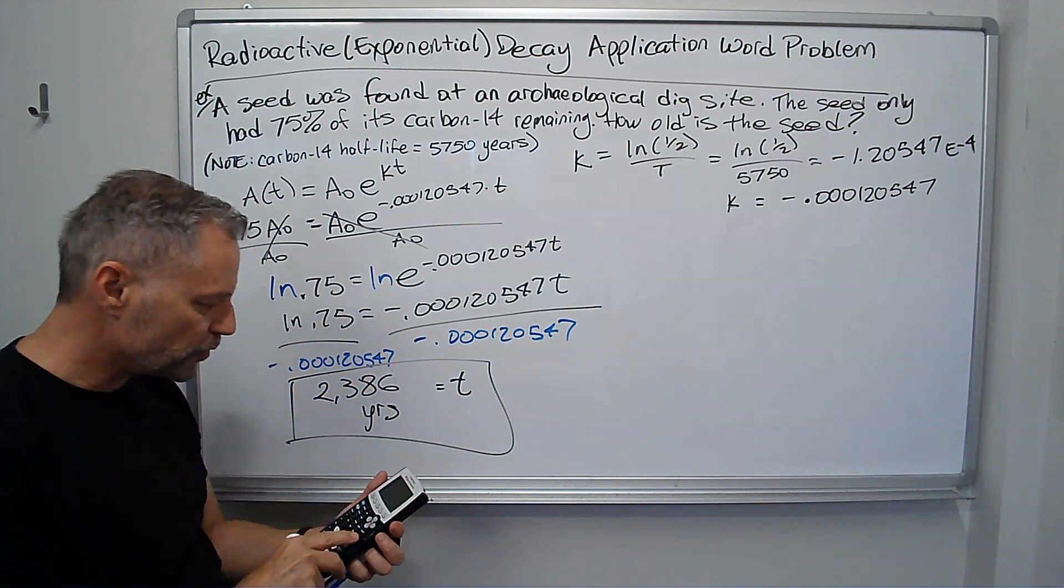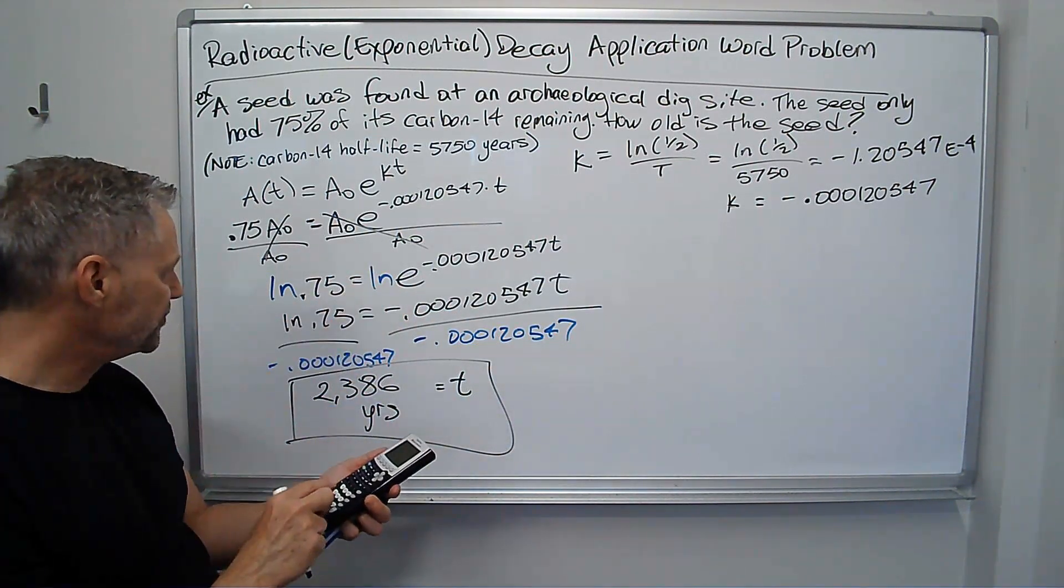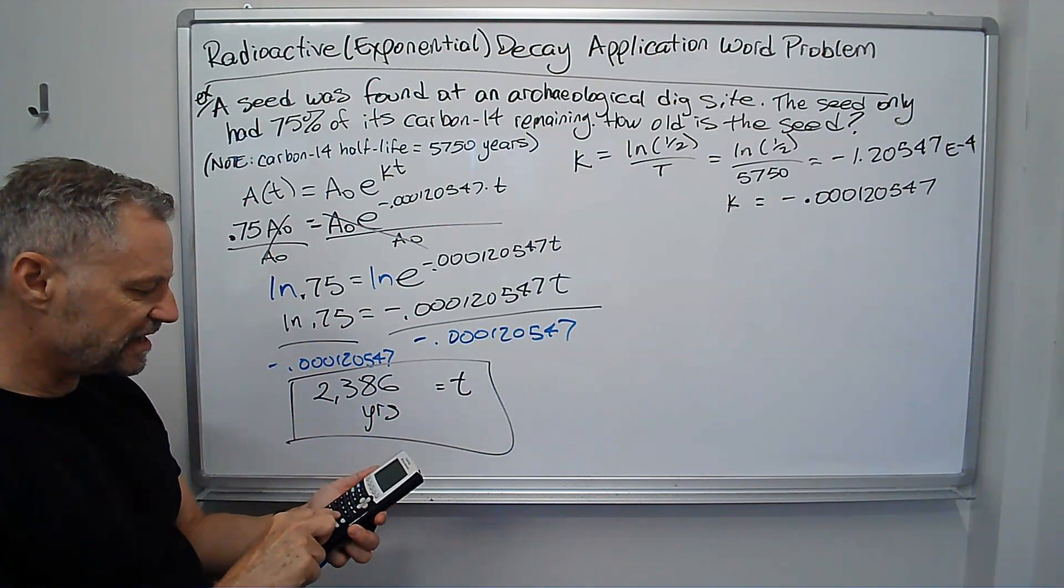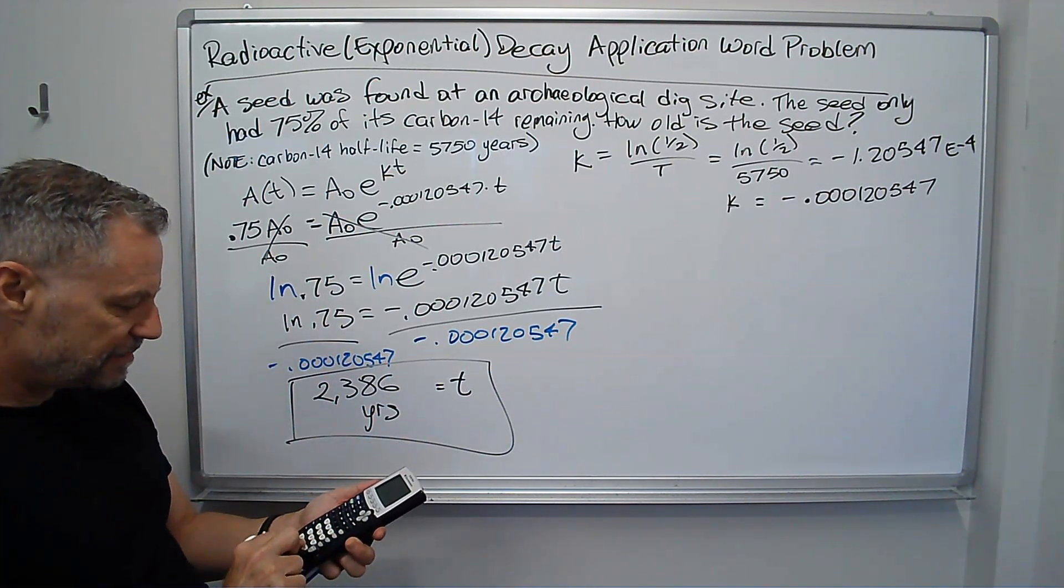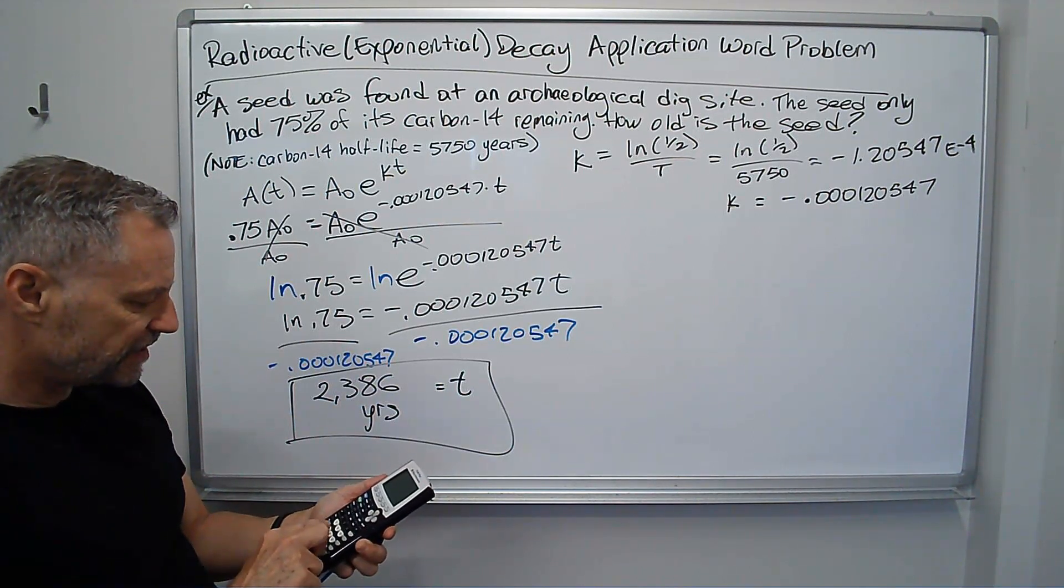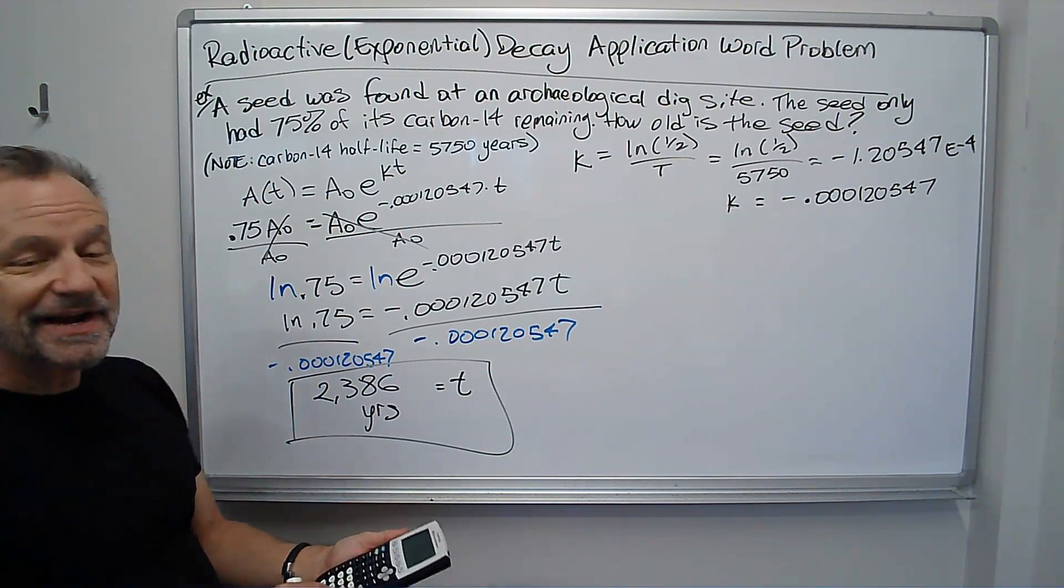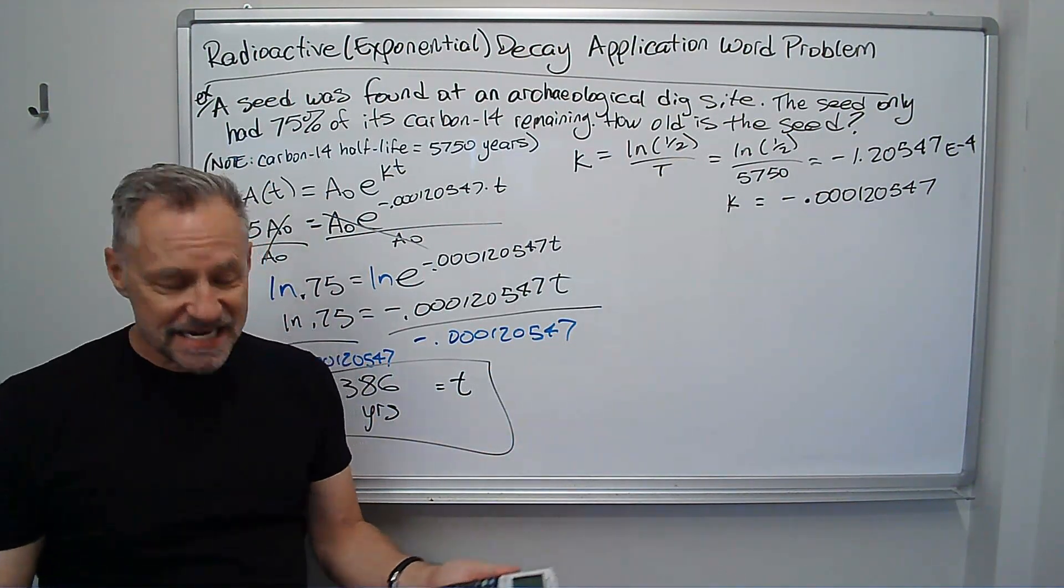Now if I use this rounded number, let's see if I, because I didn't round off much, I went quite a few decimals, ln 0.75, close parentheses, divided by negative 0.00012047, 2,386.47 years, so I carried it to enough decimals. So if you don't know how to use the answer to your calculator, you can do it that way.